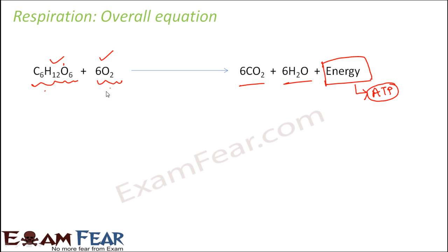In this equation, oxygen is present, so this type of respiration in presence of oxygen is known as aerobic respiration. However, not all organisms have access to oxygen, so even in absence of oxygen, respiration can take place. If the process of respiration stops, the organism cannot survive — glucose will not get converted to energy, the body will not get any energy, and no life processes inside the body will be able to function. Therefore, there has to be a provision by which respiration can take place even in absence of oxygen.